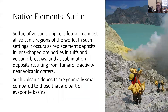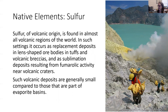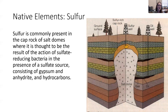The final native element is sulfur. Sulfur is of volcanic origin, almost always found around volcanoes, where it replaces deposits in lens-shaped ore bodies of tuffs and breccias. You can see people mining sulfur right at these volcanic vents and carrying it away — that's why active volcanic sites like Yellowstone smell like rotten eggs, because of the sulfur associated with that venting. Sulfur is also really common as a cap on rock salt diapirs or salt domes, thought to be there because of the action of sulfate-reducing bacteria.